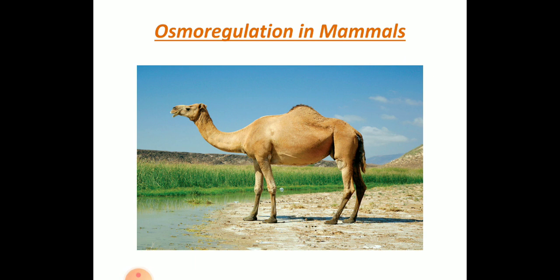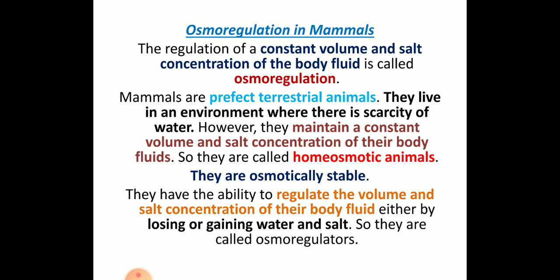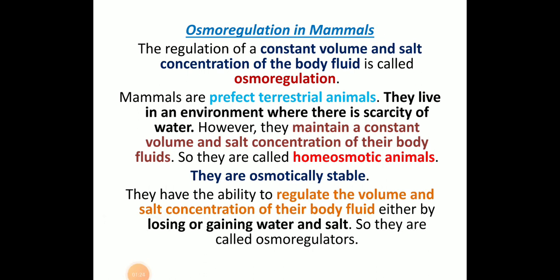We all know that mammals are highly adaptive animals compared to reptiles, fishes, and others because they can live in different habitats, regulate their body temperature, and hence they have homeostatic actions. In Osmo Regulation of Mammals, the regulation of constant volume and salt concentration of the body fluid is called Osmo Regulation.